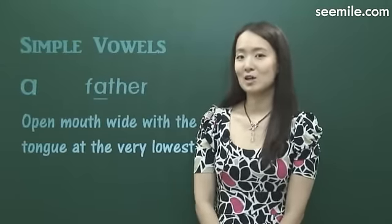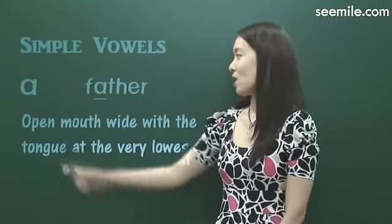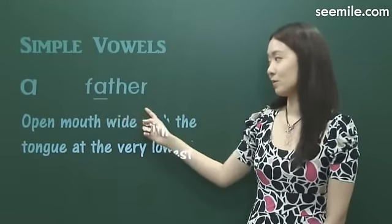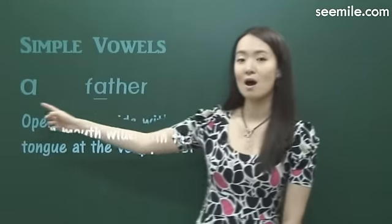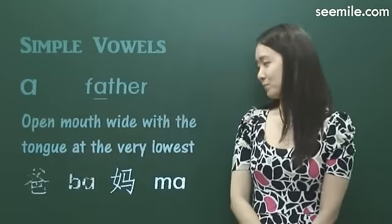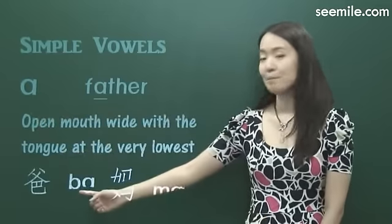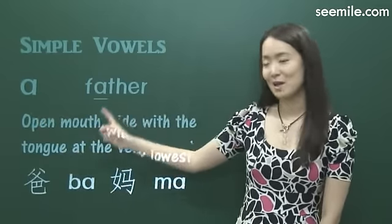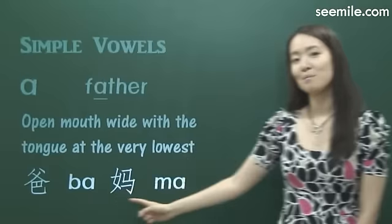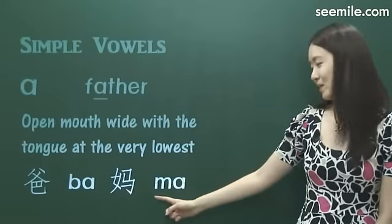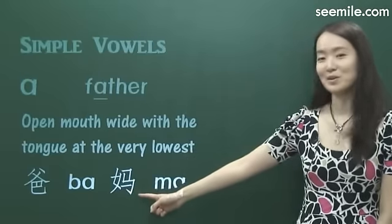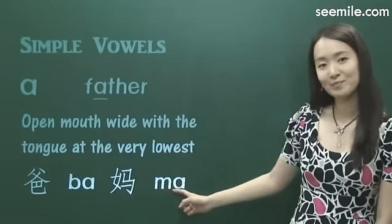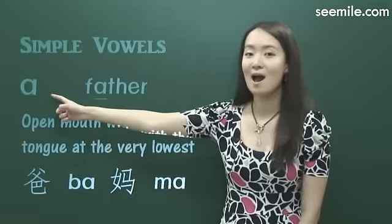First of all, 阿 is close to the sound of 'father' — 阿, father. So it's 阿. For example, 巴 is 'father' in Chinese. And 馬, this one looks familiar, right? It's 'mother' — 馬. So it's 阿.